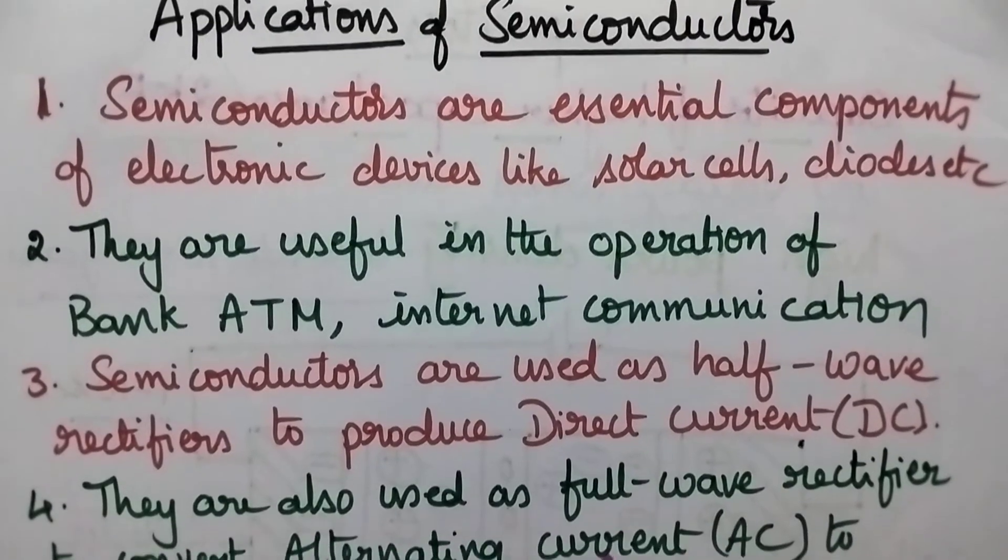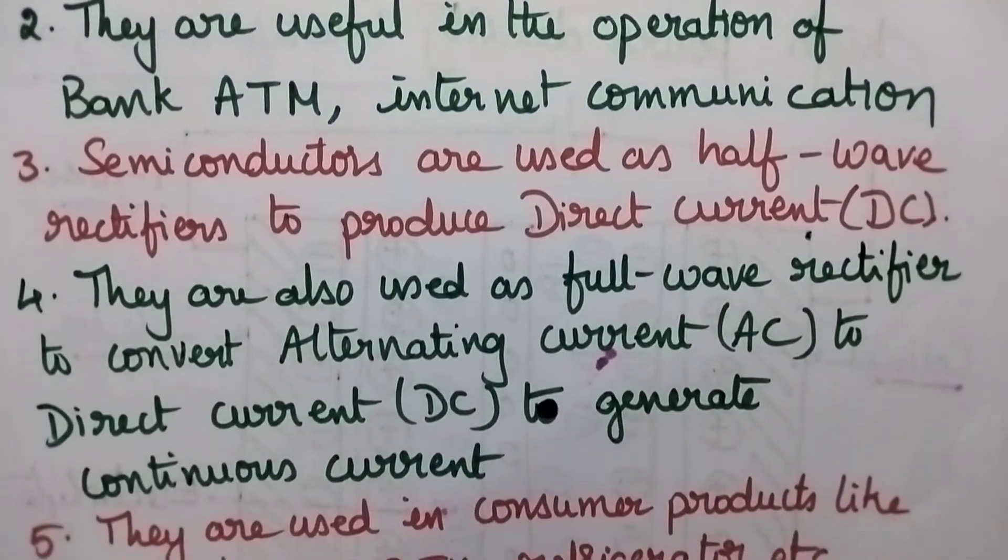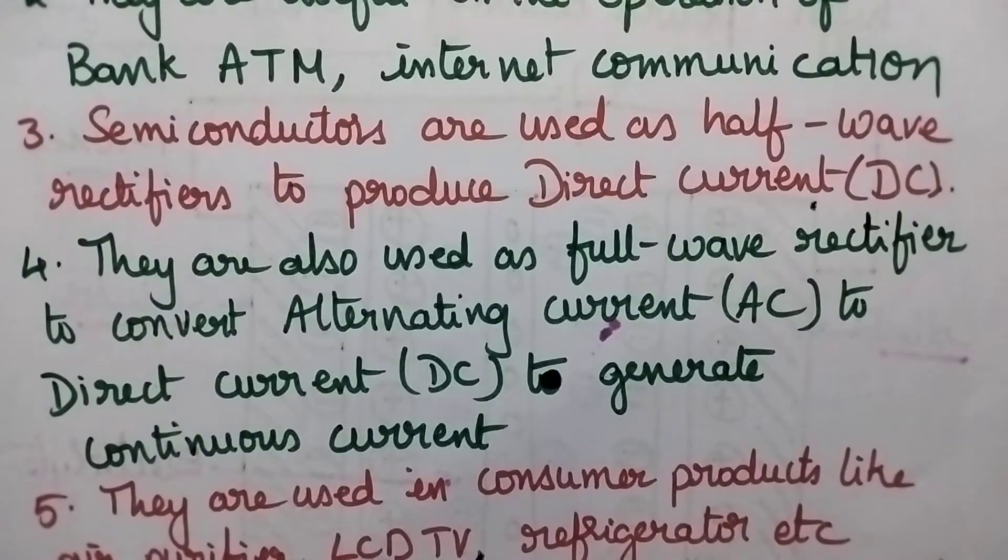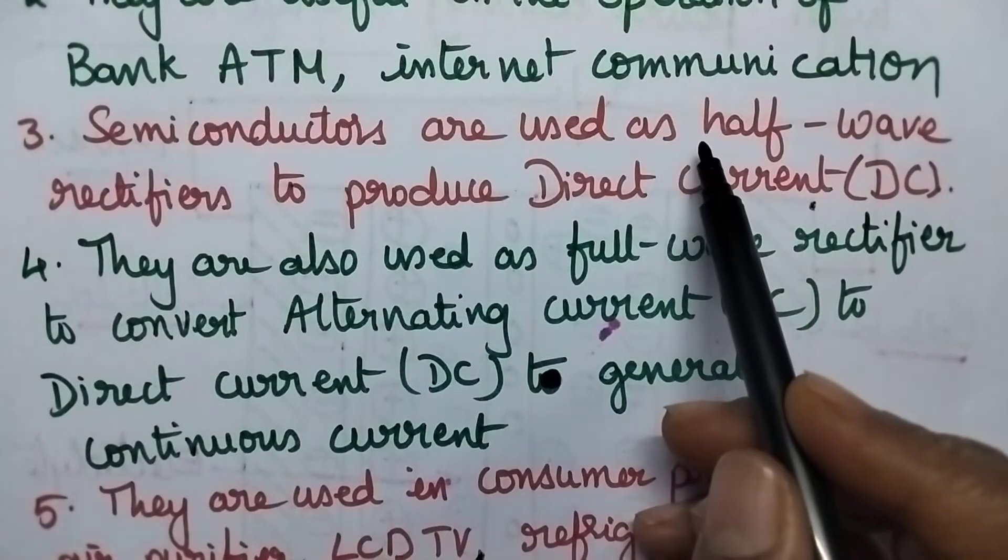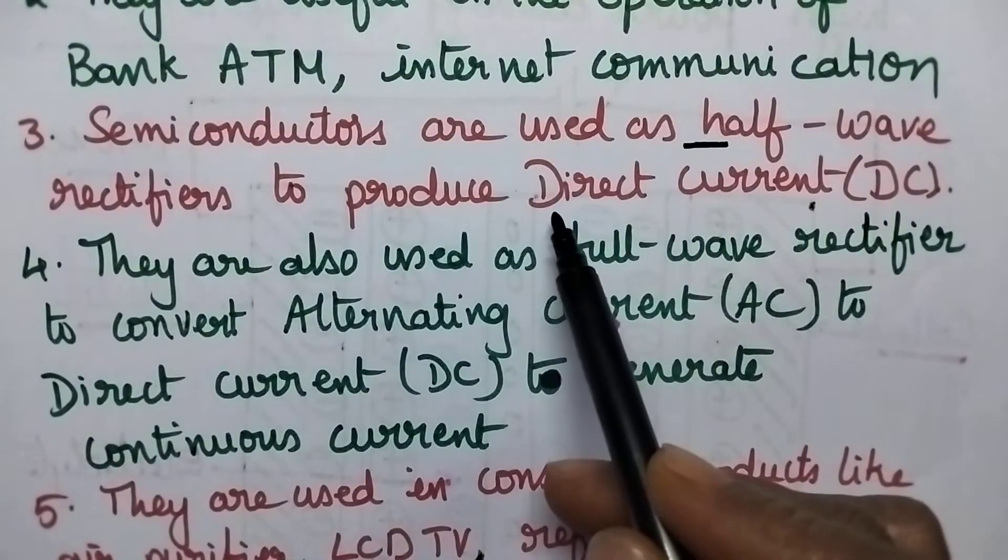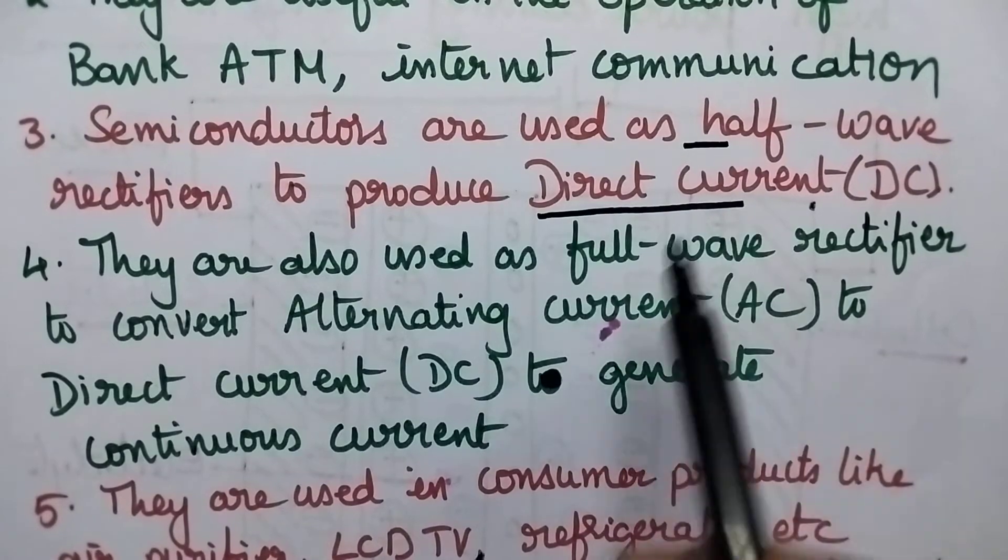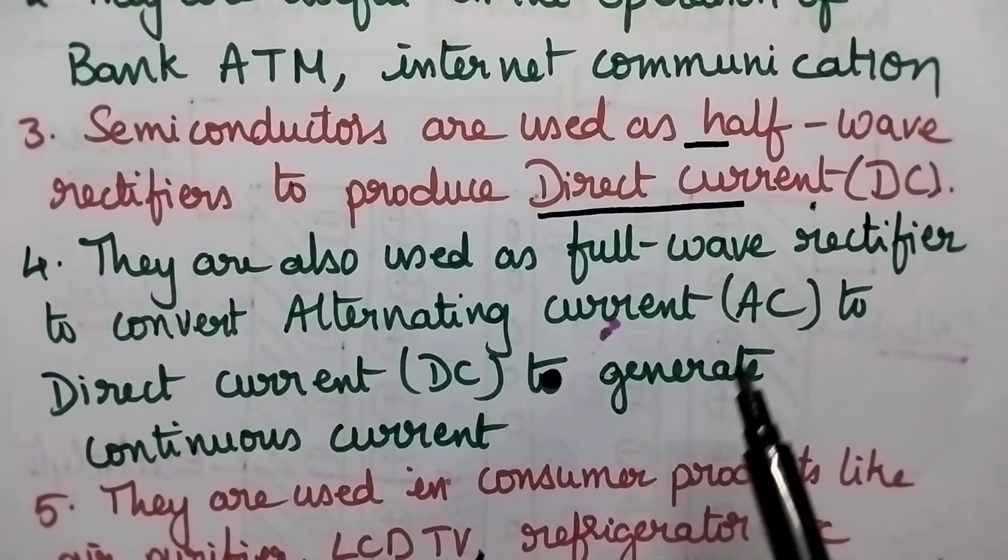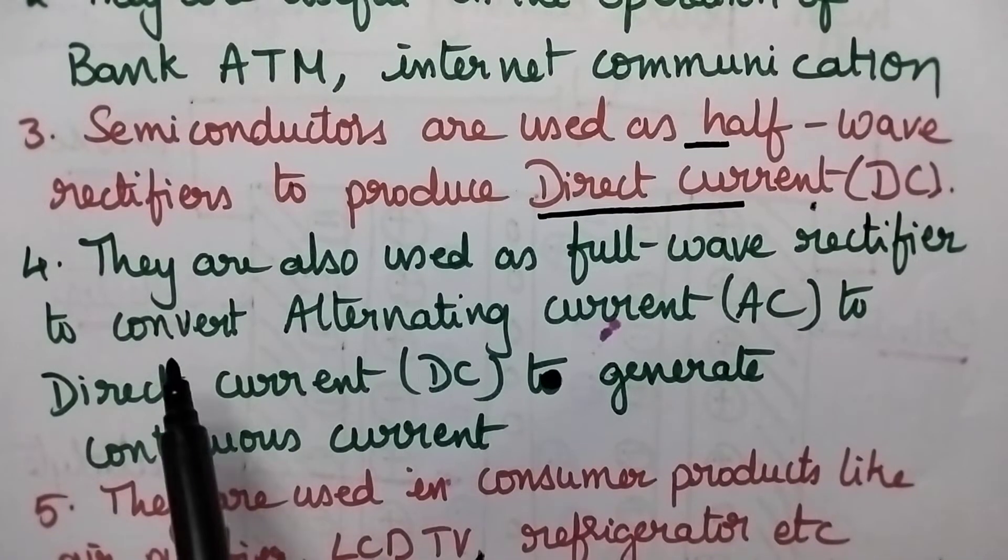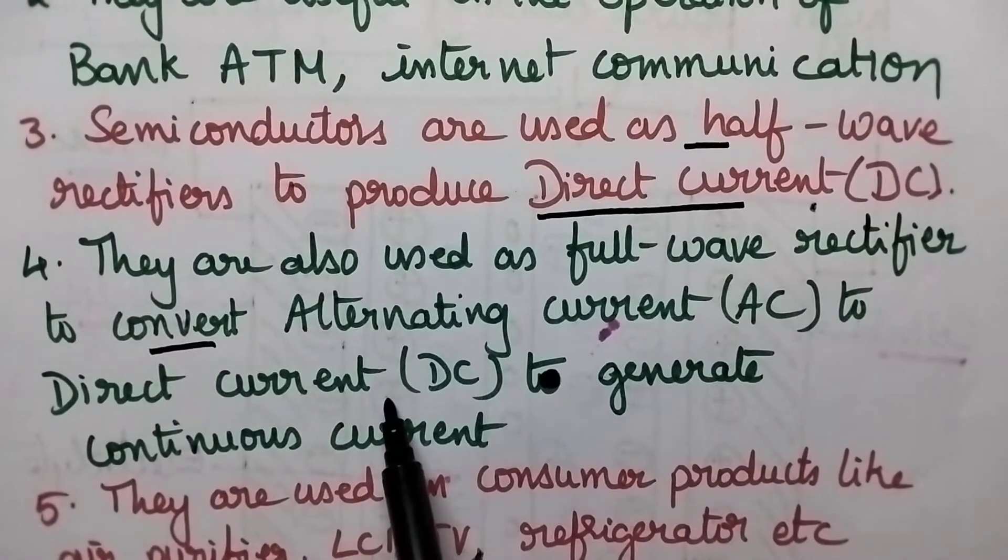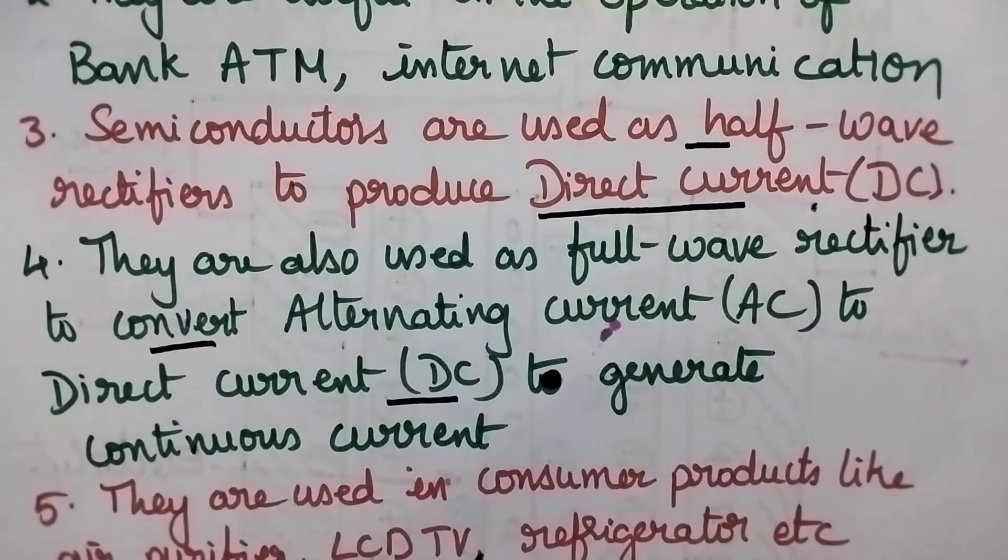These semiconductors are also used as half-wave rectifiers or full-wave rectifiers. Especially half-wave rectifiers are used to produce DC current, that is direct current. Whereas full-wave rectifier is used to convert AC to DC to generate continuous current.